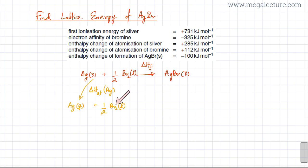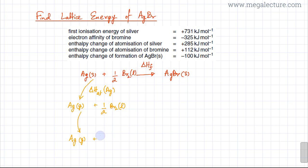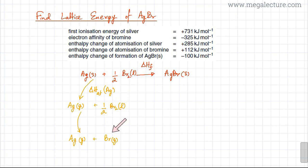In the next step I have the BR2 molecule in liquid state. I need bromine atoms to make AgBr, so I'm going to break the bonds in bromine. Silver remains as gaseous atoms, and bromine is changed into gaseous bromine atoms — separating all the atoms from liquid state into scattered gaseous atoms. This arrow is the enthalpy change of atomization of bromine, which is plus 112 kilojoules per mole.